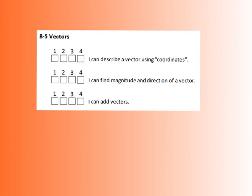Section 8.5 talks about vectors. We describe them by using coordinates, and we say that they have certain magnitude and direction. We're going to learn how to describe them using coordinates and compass directions, and also learn how to add them and find the resultant vector.